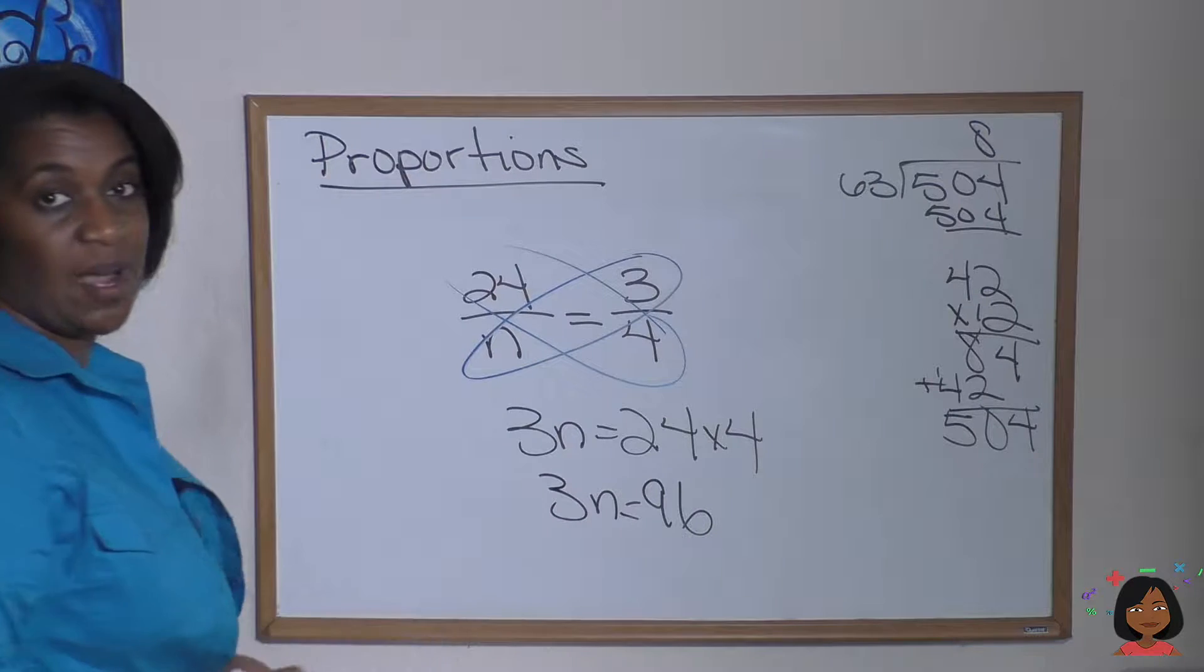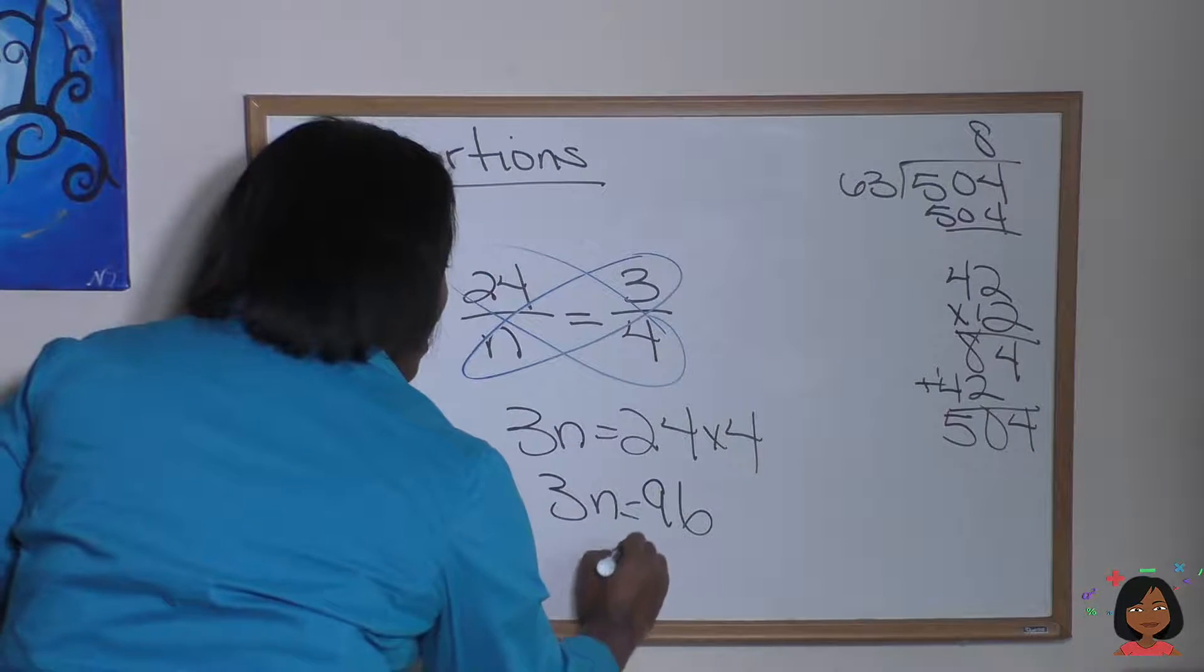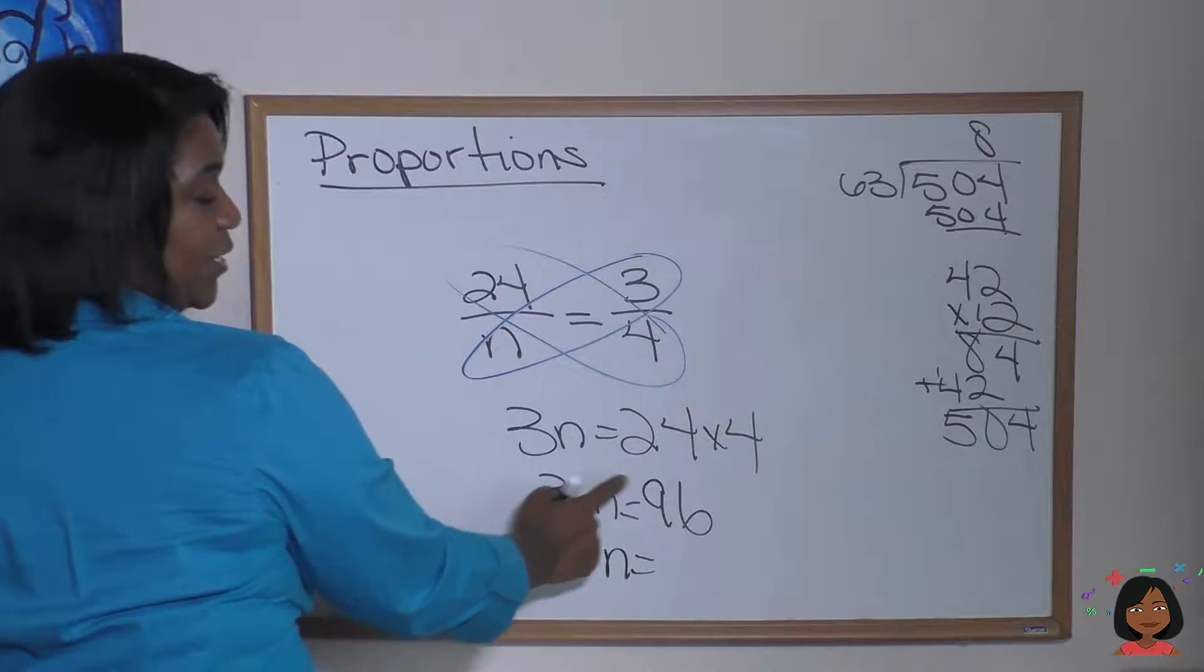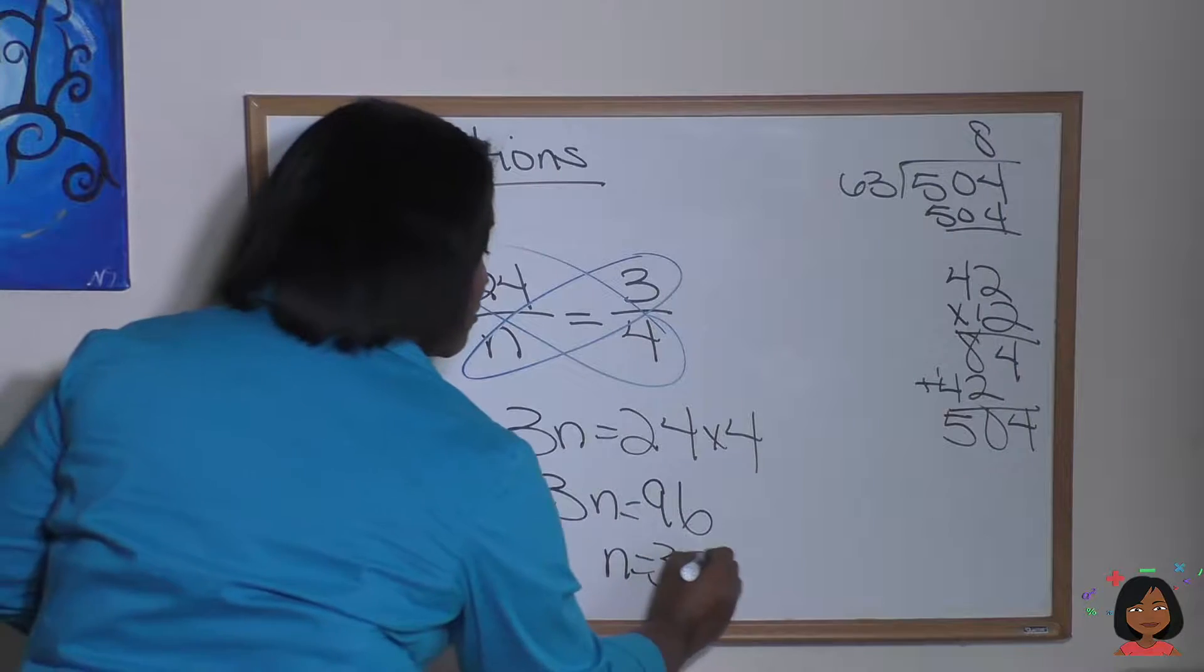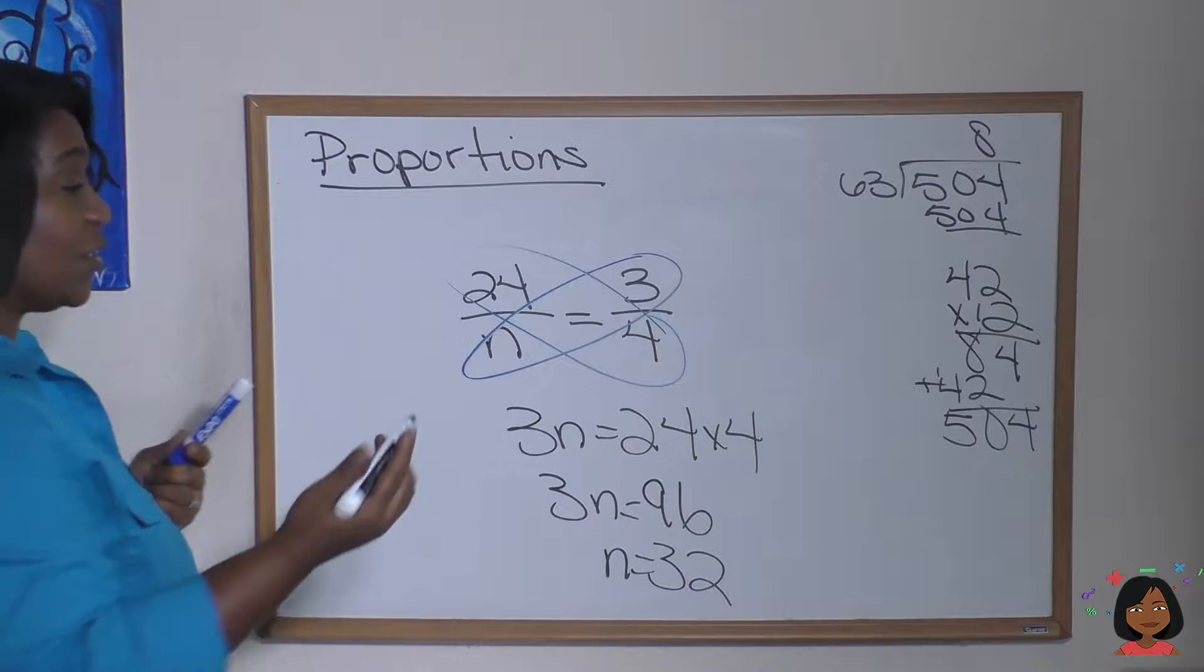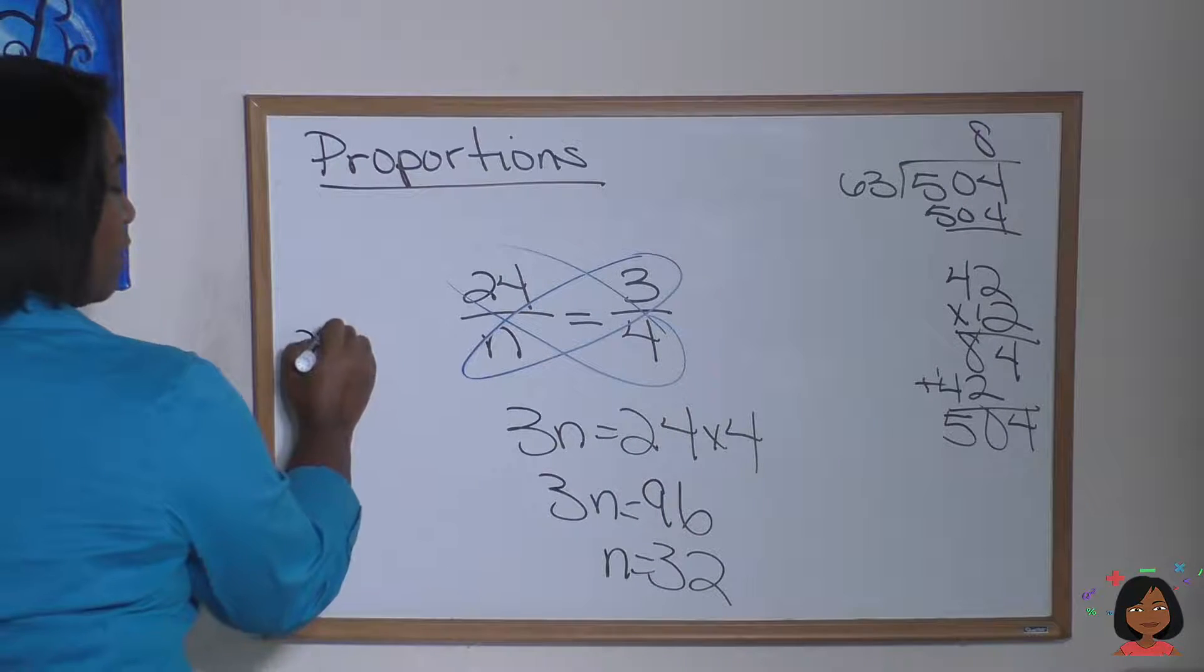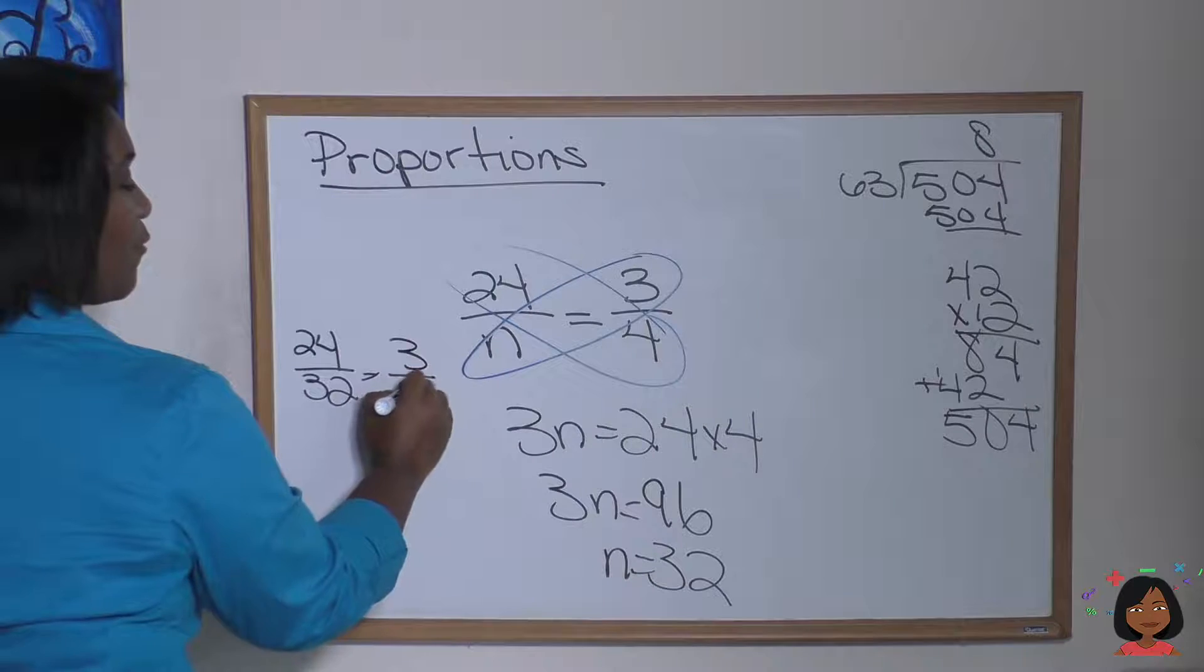And we have our 3n. And then missing number in multiplication means we divide to find the answer. n is going to equal 3 into 9 goes three times. 3 into 6 goes two times. So n equals 32. And here's what it looks like when we're done. 24 over 32 equals 3 over 4.